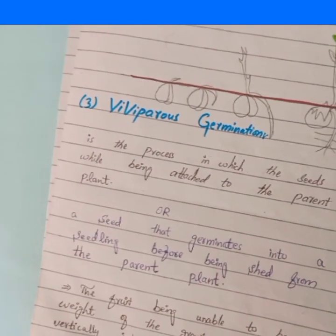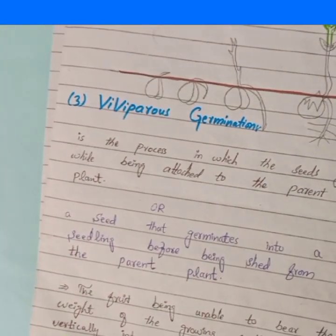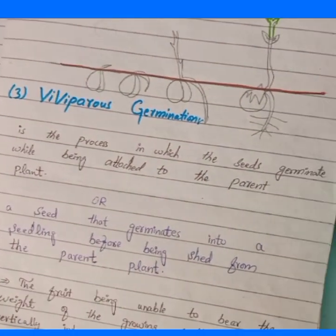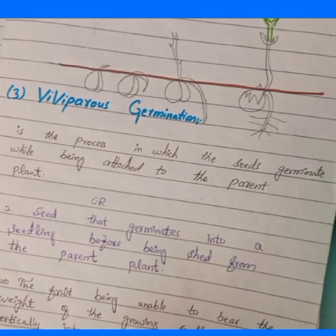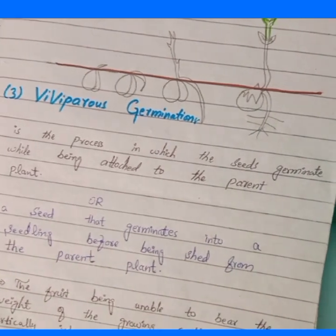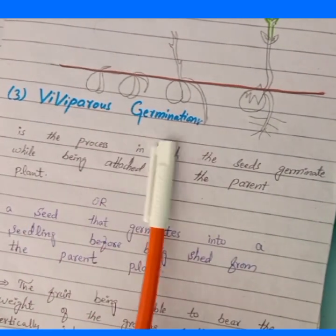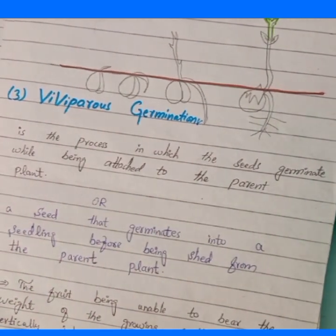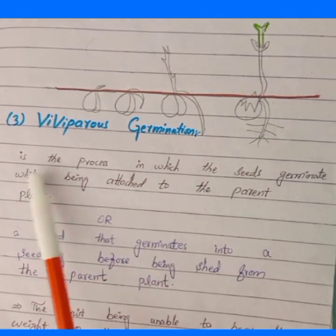We call viviparous germination abnormal because it is not a normal kind of germination. It occurs only when the plant is under stress conditions — such as water stress, drought stress, or any other kind of stress — causing the seeds to start germination while still on the parent plant.